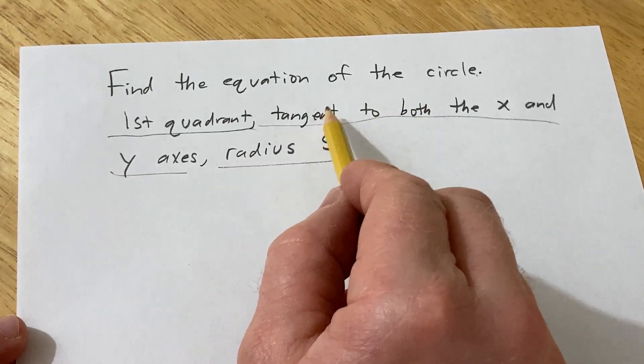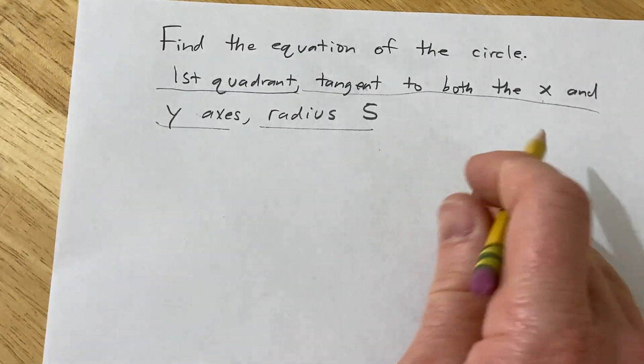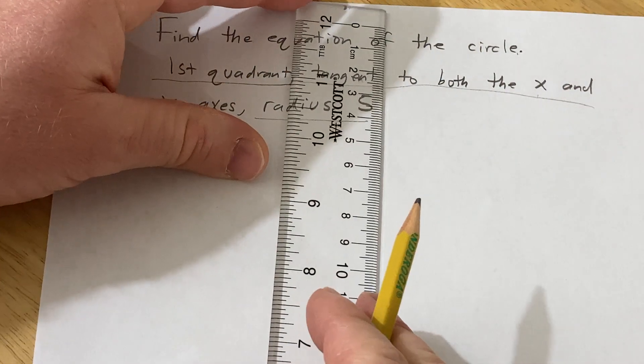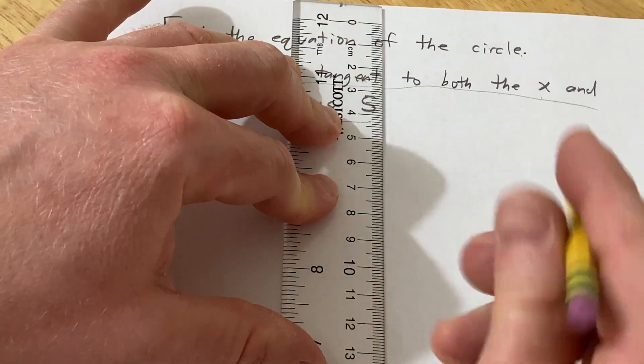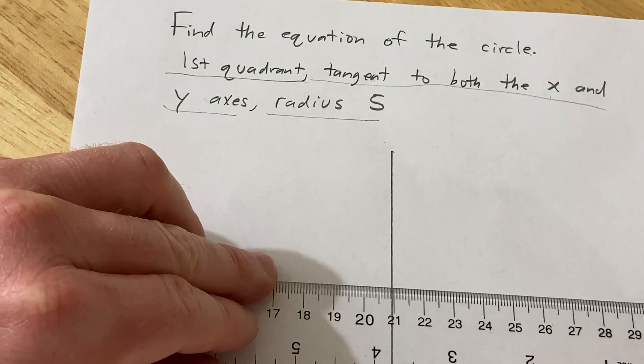This means that it basically just touches the x and y axes. Alright, we'll start by drawing a quick sketch of the xy plane. I've got my ruler here, so here's the y-axis and then here is the x-axis.